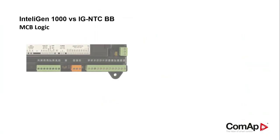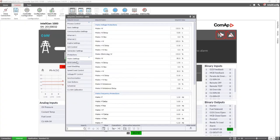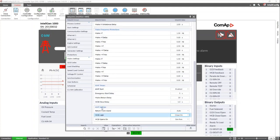Now let's talk about the difference in the MCB logic. In the Intelligent 1000 in SPTM application, we have the parameter MCB logic, and this doesn't exist in our IGS and T controllers. It is used to configure the opening and closing control logic of the MCB breaker which is associated with the mains, and it has its main function when this device is a contactor, since we can choose between the control with direct or reverse logic to avoid the unexpected opening of the MCB breaker in case of an unwanted opening of the controller output. We go to set points button, then set point group main settings, then AMF settings, and there we're looking for the MCB logic parameter.